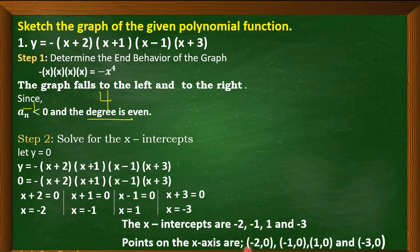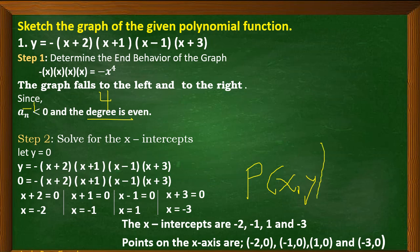The corresponding points on the x-axis are (−2, 0), (−1, 0), (1, 0), and (−3, 0). Remember that each point has an x and a y value, and since we let y = 0, all these points have y = 0.